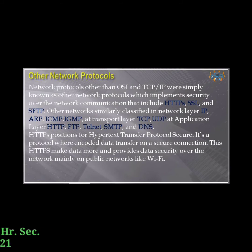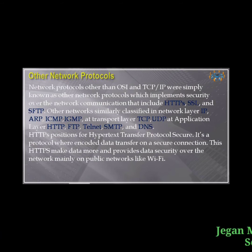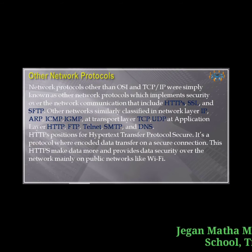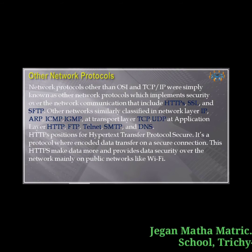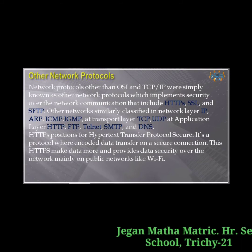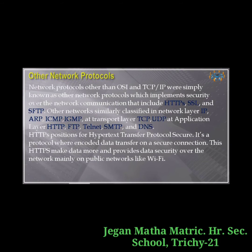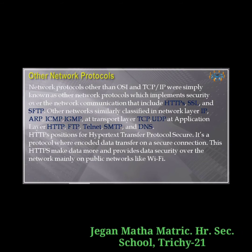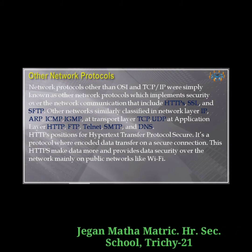Other network protocols — those other than OSI and TCP/IP — implement security through network communication. These include HTTPS, SSL, and SFTP. Other protocols are classified by layer: at the network layer we have IP, ARP, ICMP, and IGMP; at the transport layer, TCP and UDP.